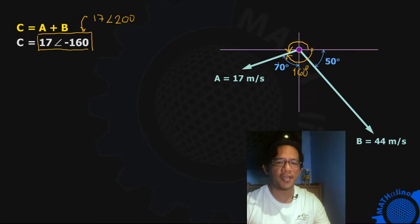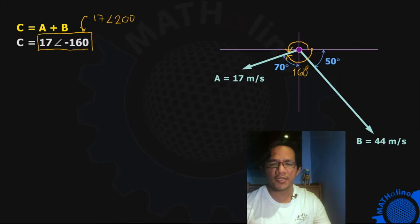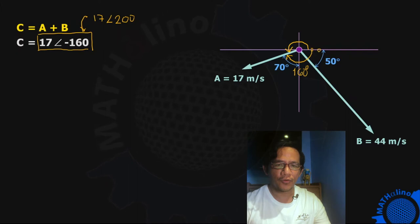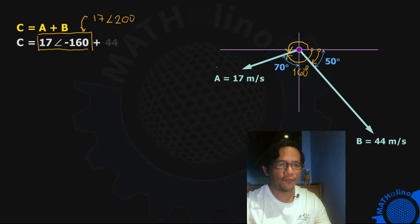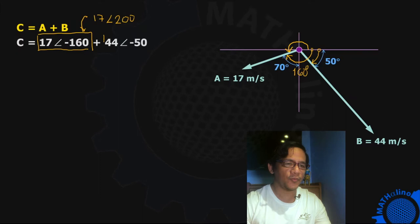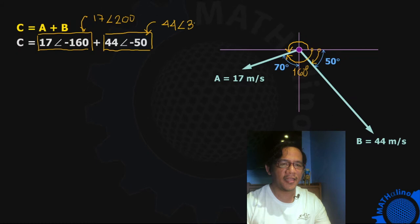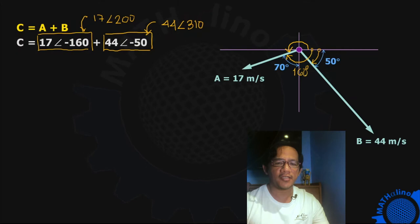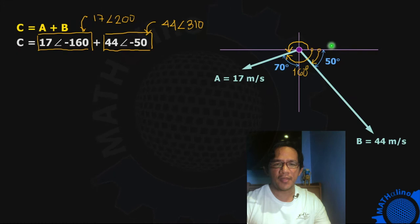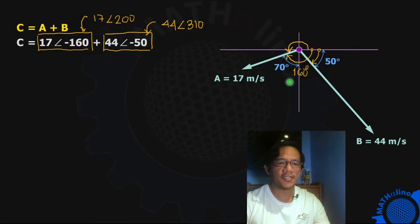How about this 44 meters per second vector? From the positive side of the x-axis, we're going to rotate counterclockwise. So this is 44 angle negative 50. Again, we can also write this one according to positive rotation of angle: 44 angle positive 310. The positive 310 is from the positive side — you are going to rotate counterclockwise. That is the positive 310.